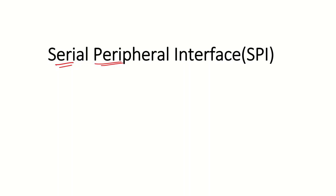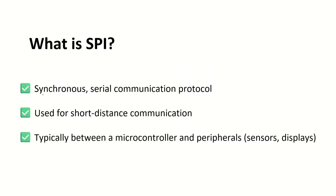SPI is nothing but Serial Peripheral Interface. It is a synchronous protocol. In the embedded world, wherever you see 'synchronous,' that indicates a clock signal. Whenever you are using clock signals for communication between two peripherals, that is called synchronous communication. If you are not using any clock signal, then that is asynchronous communication. SPI is a synchronous communication, which means it uses a clock signal for transmission of data, and it is a serial communication protocol.